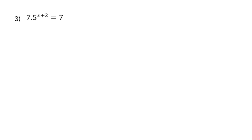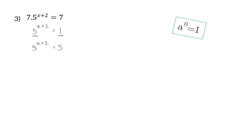Now that you know the basic principles, we are going to add some previous knowledge of exponents. Firstly, I am going to get rid of the times by 7 on the left by dividing both sides by 7, so on the right I will have 7 divided by 7, which is 1. My next aim is to get the base on each side the same. We have a base of 5 and of 1, so now it is important to remember the definition that says anything to the power of 0 is 1. I now want a base of 5 on each side, and to rewrite 1 in terms of a base of 5, it will be 5 to the power of 0.